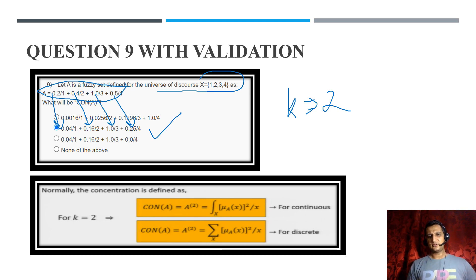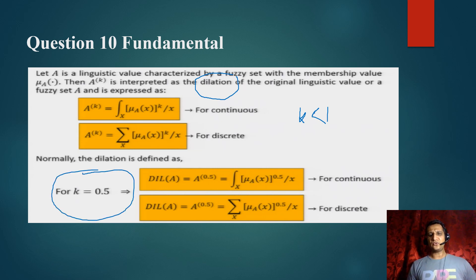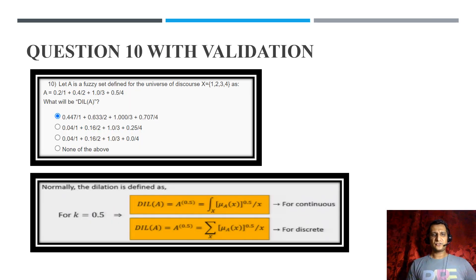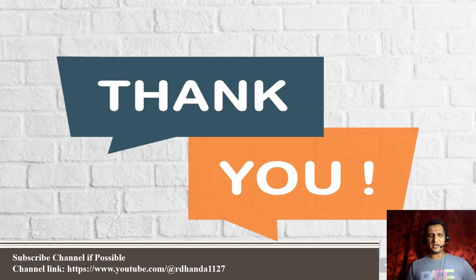Question 10 covers dilation, which occurs when k < 1 — normally k = 0.5. In this case we take the square root of each membership value. For the same fuzzy set on {1, 2, 3, 4}: √0.2 ≈ 0.4472, √0.4 ≈ 0.6332, √1 = 1, √0.5 ≈ 0.7071. Option A is the correct answer. If there is any discrepancy, let me know so we can rectify and update the solution.